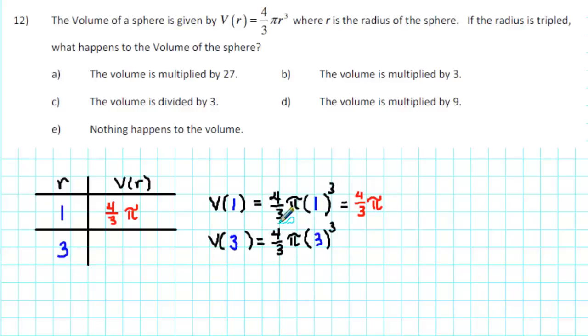We find that the volume is (4/3)π times the cube of 3. The cube of 3 is 3 times 3 times 3, which is 27. So the volume is 27 times (4/3)π.